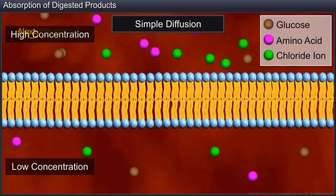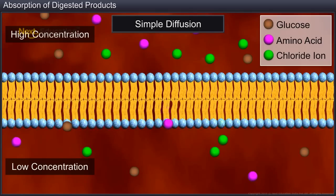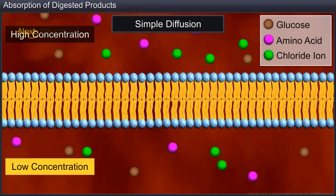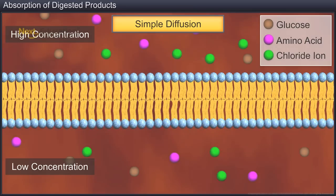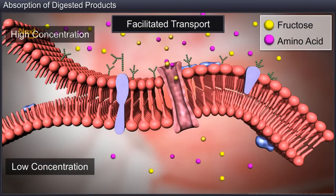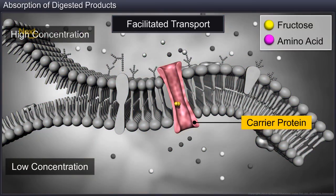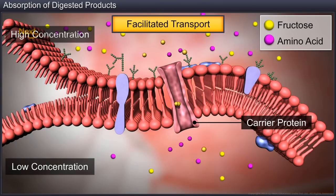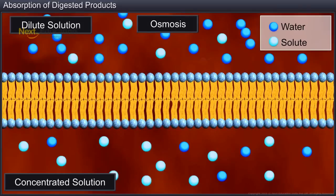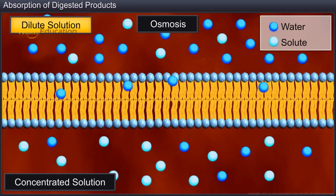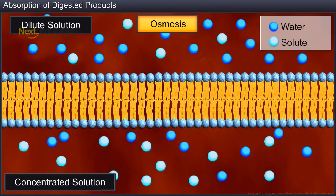Small amounts of glucose, amino acids and electrolytes such as chloride ions are generally absorbed from a higher to a lower medium by simple diffusion, whereas fructose and some amino acids are absorbed down a concentration gradient with the help of a specific carrier protein through facilitated diffusion. On the other hand, transport of water takes place from a dilute to a concentrated medium through osmosis.